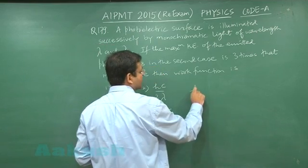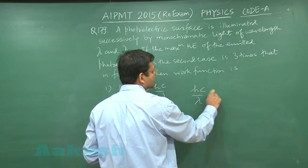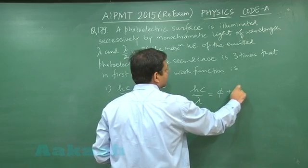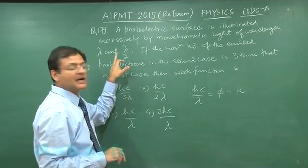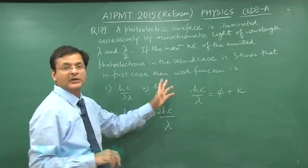The formula I will use is hc/λ equals work function plus maximum kinetic energy. The surface has been illuminated by wavelength λ and λ/2. In the two cases, when you reduce the wavelength, the kinetic energy becomes greater.